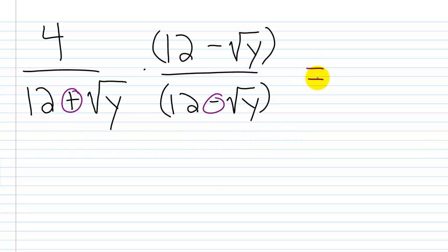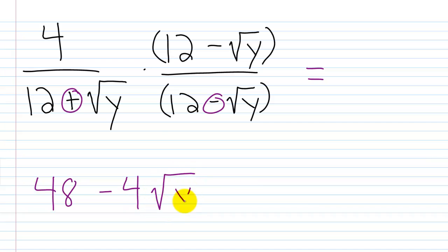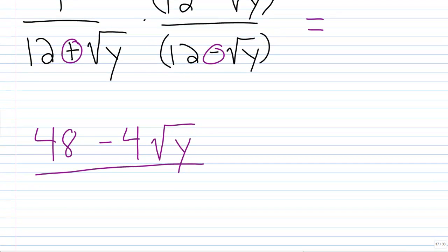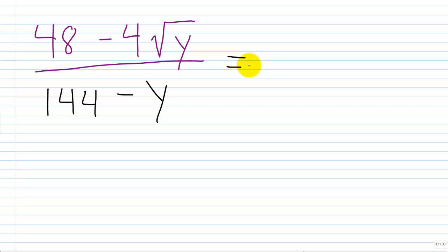In the numerator we have 4 times 12, which is 48, then minus 4 times the square root of y. In the denominator we use our trick: first times first — 12 times 12 is 144 — then minus last times last — square root of y times square root of y is y. So we have 144 minus y. There's nothing we can do to simplify further: 144 minus y means we can't cancel common factors between numerator and denominator, and we can't simplify the square root of y. So we leave this as 48 minus 4 times square root of y over 144 minus y.